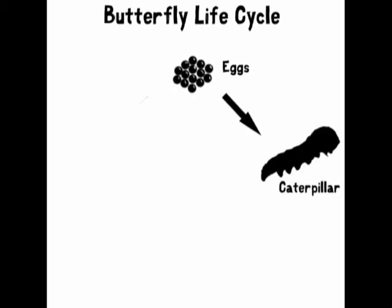It begins with the eggs. In roughly five days, they hatch and out comes a caterpillar. The caterpillar will then spend all its time eating and growing.